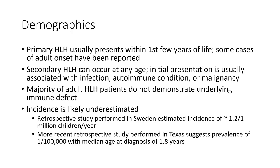Demographically, primary HLH usually presents within the first few years of life, though some cases of adult onset have been reported. Secondary HLH can occur at any age, with initial presentation usually associated with infection, autoimmune condition, or malignancy. Majority of adult HLH patients do not demonstrate underlying immune defects. Incidence is slightly underestimated; retrospective studies performed in Sweden estimate an incidence of 1.2 per million children per year, with a more recent study suggesting prevalence of 1 in 100,000 and a median age at diagnosis of 1.8 years.